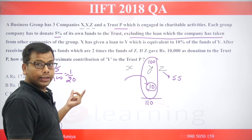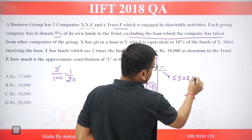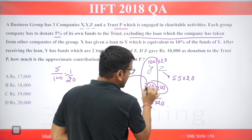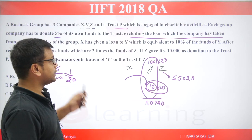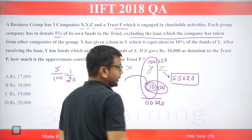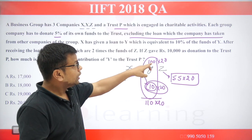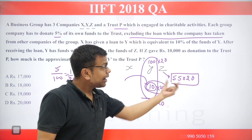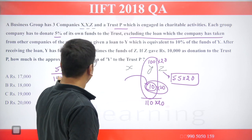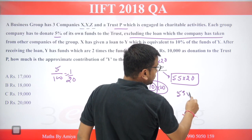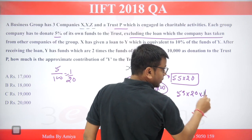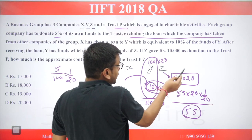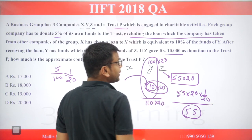G is 1 by 20, meaning 55 into 20 — G has loaned 55 rupees to the trust. That means 55 rupees is the donation from G. Listen: if G has 10,000, it gives 55 to the trust.